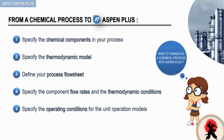Finally, you will need to specify the operating conditions for the unit operation models — for example, the pressure, the number of stages, or the reflux ratio if you are modeling a distillation column. Once you successfully perform these five steps, ASPEN PLUS will inform you via the simulation status that all required input data are complete. You can then run the simulator, perform sensitivity analysis, design specification checks, equipment debottlenecking studies, and so on. We will guide you step by step through the process of modeling chemical processes, and after completing this course, you will become an advanced ASPEN PLUS user.